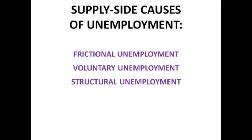Voluntary unemployment is when workers aren't prepared to take a job at current wage rates. For example, if there's a job opening at a fast food restaurant but I don't want to work in that environment for five pounds an hour, I might claim benefits instead and wait for a better opportunity. Voluntary unemployment can also include someone whose partner earns enough that they choose to stay home and raise children rather than work.